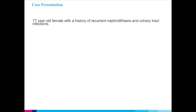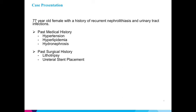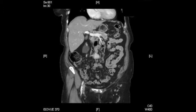Our patient is a 77-year-old female with a long history of recurrent urinary tract infections and nephrolithiasis who has undergone two percutaneous nephrolithotomy procedures. Workup revealed ureteropelvic junction obstruction of the right hemikidney, which was previously managed with ureteral stenting. Unfortunately she has failed conservative management of her obstruction, resulting in a non-functioning hydronephrotic right hemikidney which continues to contribute to recurrent urinary tract infections and intermittent pain.